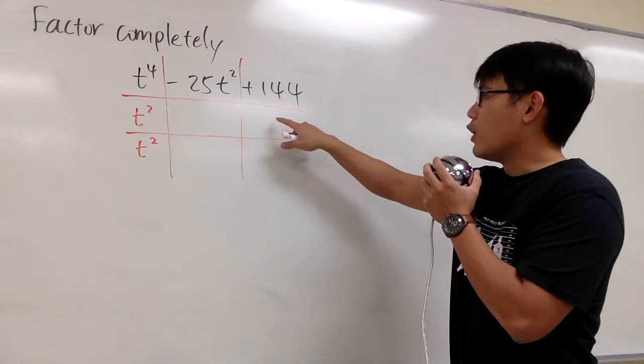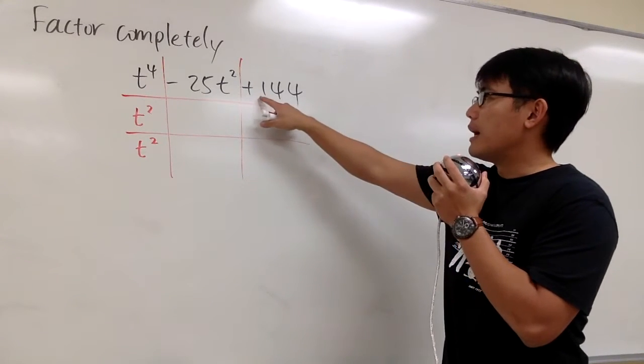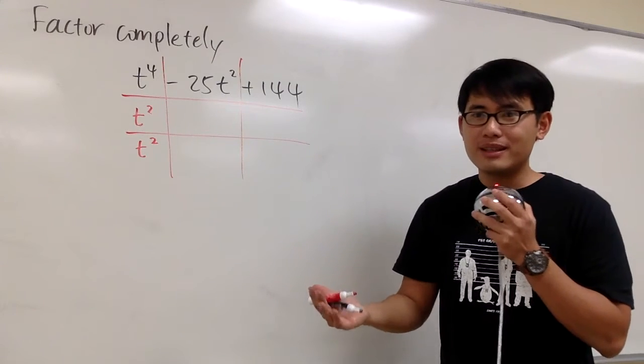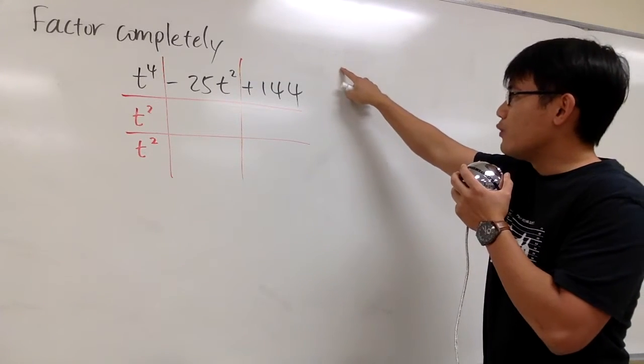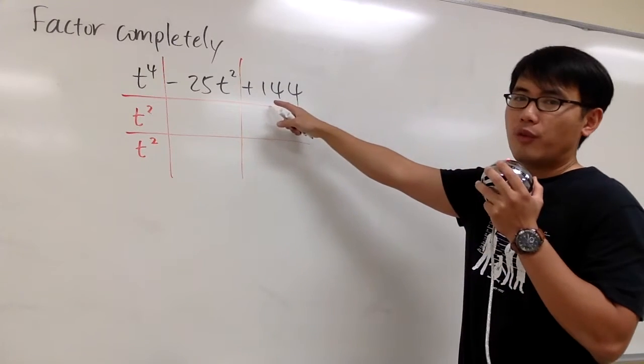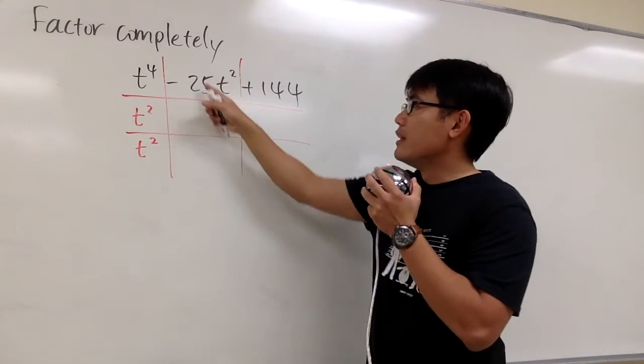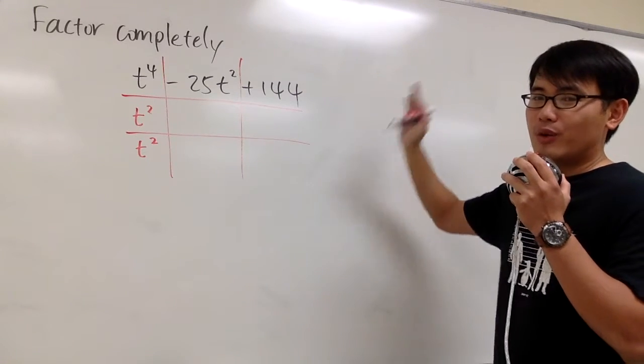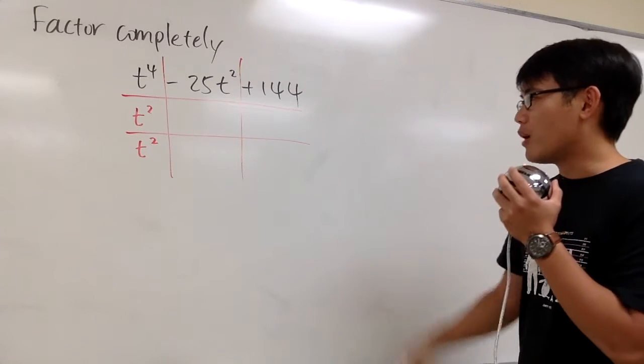Alright, and now we have to figure out what times what would give us 144. We do have a couple possibilities, right? We know 144 times 1 is going to give us 144, but I know I have to end up with negative 25 in a second. So I know that's obviously not the right choice. 144 and 1 is too big, right? Too far apart.